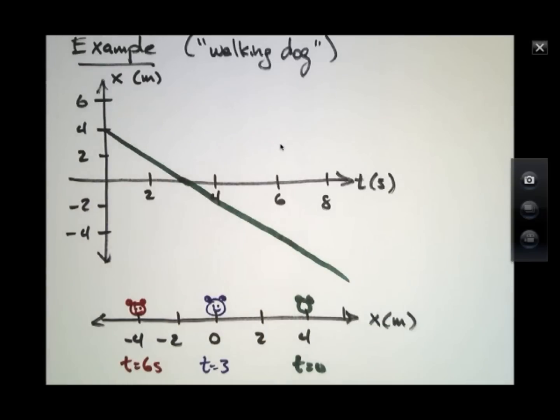So we call it the walking dog example because it indicates something that's started out, if you're sitting at the origin, something that's starting out on the positive side, is walking toward you and keeps on going. Just a straight, what's called linear motion.